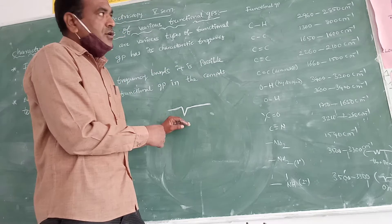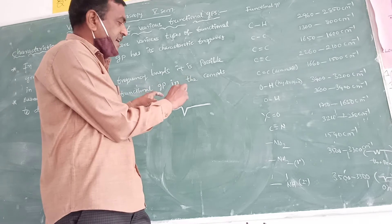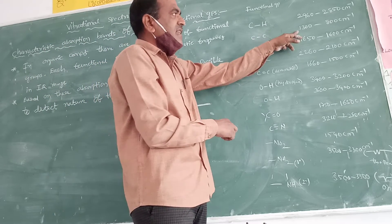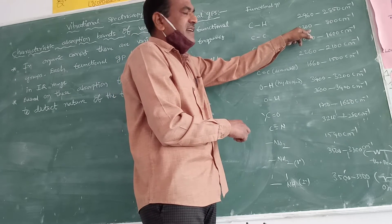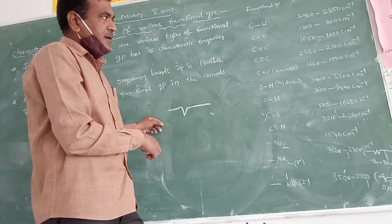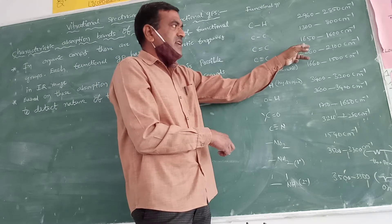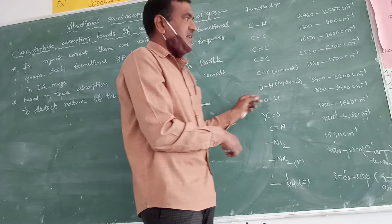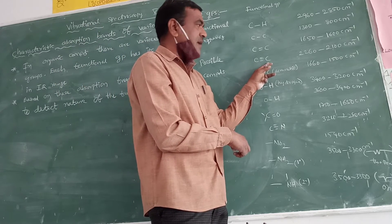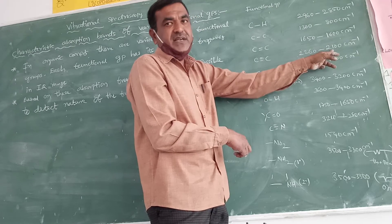The C-H absorption appears in the 2960 to 2850 cm⁻¹ region. For carbon-carbon single bond (C-C), the absorption band appears at 1300 to 1800 cm⁻¹. For carbon-carbon double bond (C=C), the peak appears at 1650 to 1600 cm⁻¹. For carbon-carbon triple bond (C≡C), the peak appears at 2260 to 2100 cm⁻¹.